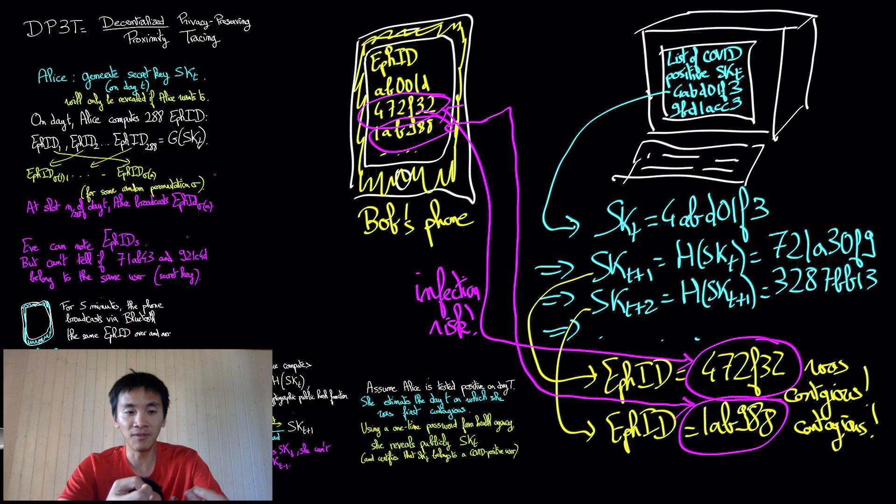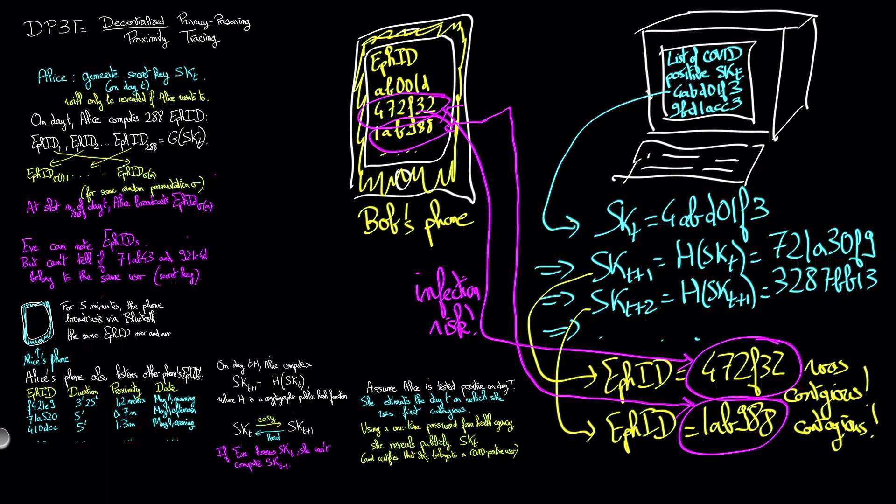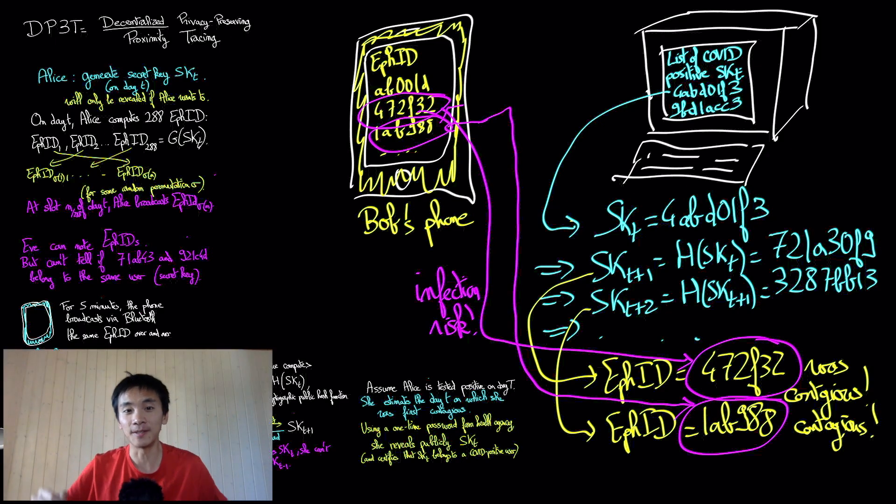He will then be invited to take a COVID-19 test and to isolate himself. Let me add that this is the basic version of DP3T, an upgrade has been provided that provides better privacy guarantees by exploiting the idea of cuckoo filters. And overall, this is it. This is how DP3T works.